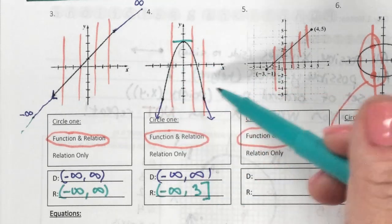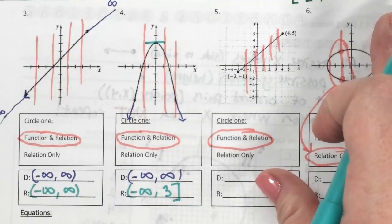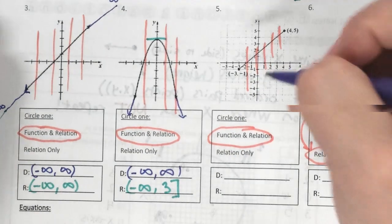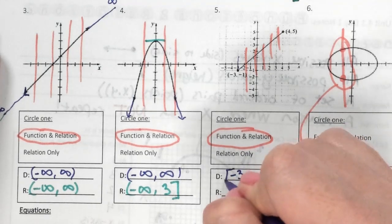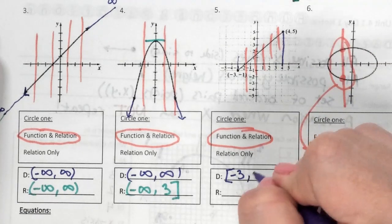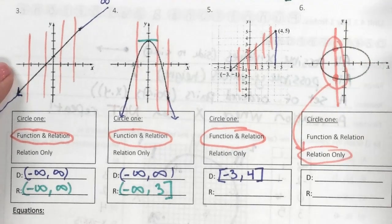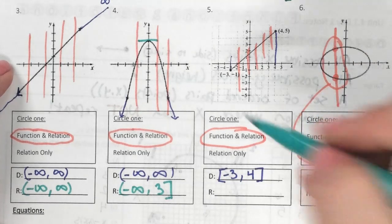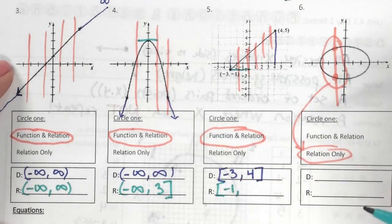With proper quadratics that open upwards and downwards, your domain will always be negative infinity to infinity. Now let's look at this one with a starting and stopping point. The farthest left is negative 3 with a closed dot — it touches that. The farthest right is 4 — there's your domain, meaning there is a point everywhere between negative 3 and 4. The lowest it goes is negative 1 and the highest is specified by the endpoint.